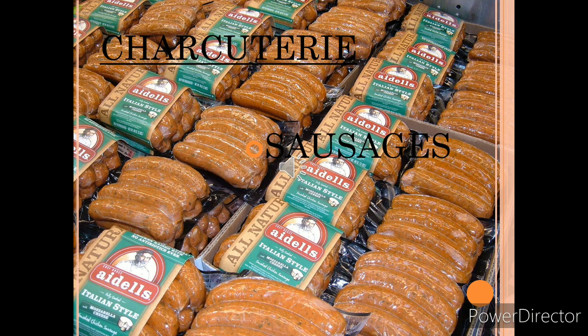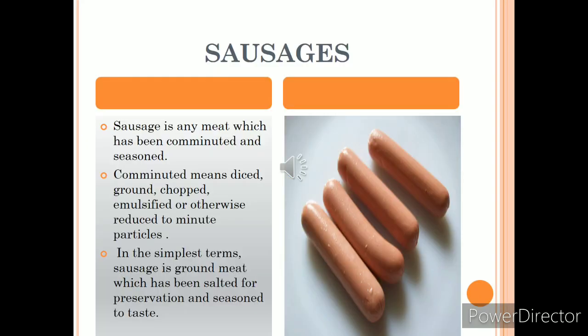Today Charcuterie is no longer limited to just pork products; the word is used in a broader sense to represent a method and style of cooking, as well as a manner of serving food. There is no strict rule regarding Charcuterie — the only rule is that you have to use fresh items and fresh meat. In this video we are going to talk about sausages. A sausage is any meat which has been comminuted — meaning diced, ground, chopped, or emulsified and reduced to minute particles — and seasoned. In simple words, it is a ground meat which has been salted for preservation and seasoned to taste.